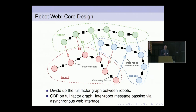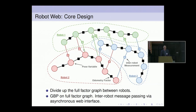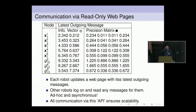The robots, whenever they can, connect to each other's web pages and read the latest outgoing messages. Robot two connects to robot one's web page and asks: are there any new messages for me? If robot one has done some updates, there will be new messages on those edges of interest to robot two. It just copies those across. This is a little visualization of what that web page might look like — a list of factors and variables for which there is a new message.